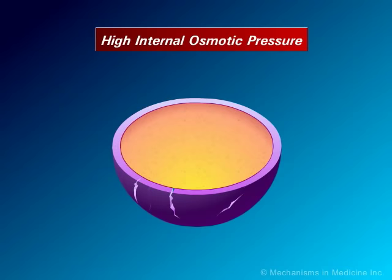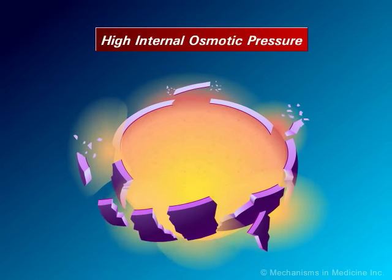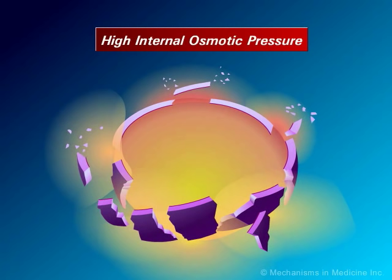Gram-positive bacteria have a high internal osmotic pressure. Without a normal rigid cell wall, these cells burst when subjected to the low osmotic pressure of their surrounding environment. Additionally, the antibiotic penicillin-binding protein complex stimulates the release of autolysins that are capable of digesting the existing cell wall. Beta-lactam antibiotics are therefore considered bactericidal agents.